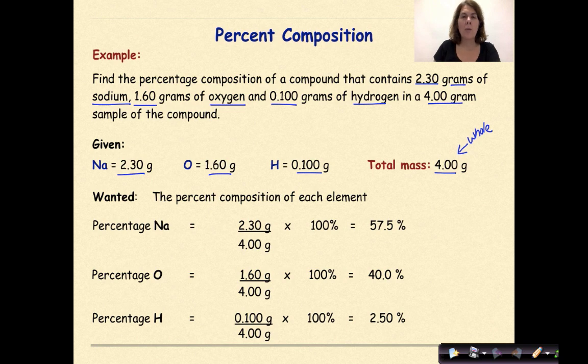So let's look at how to calculate the percentage of sodium. We have our part, which is 2.30 grams that was given to us, over the whole of 4 grams times 100 gives us 57.5 percent.